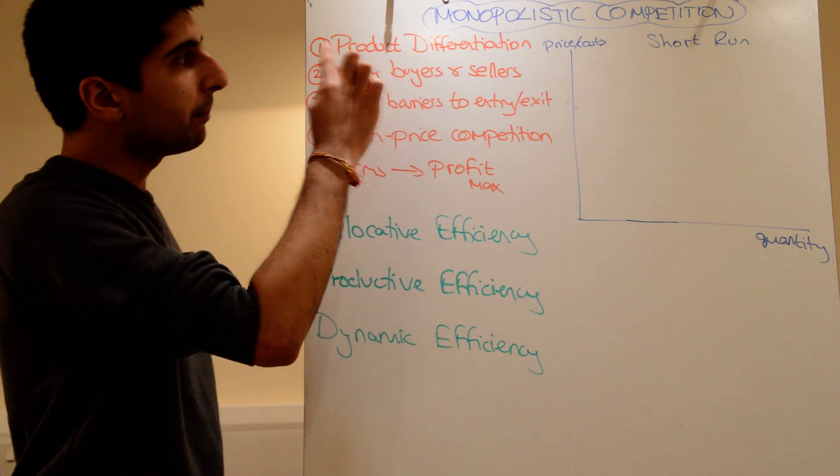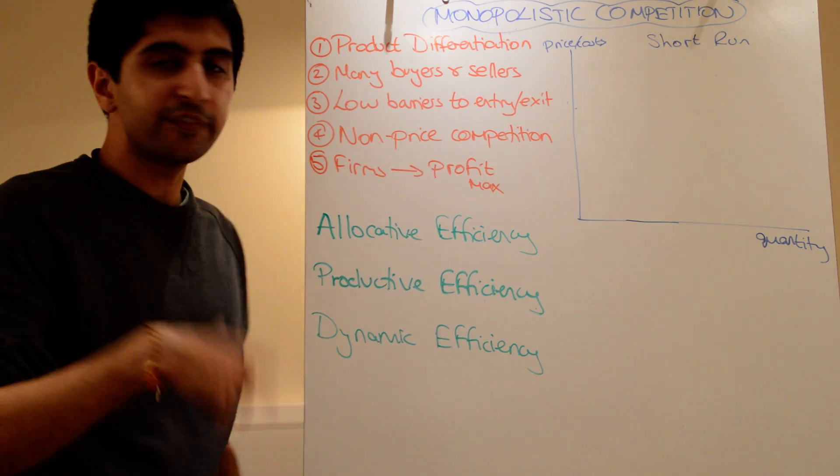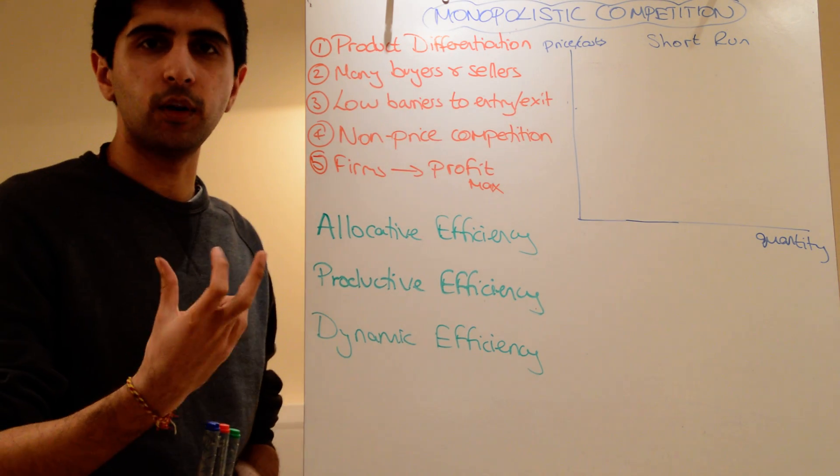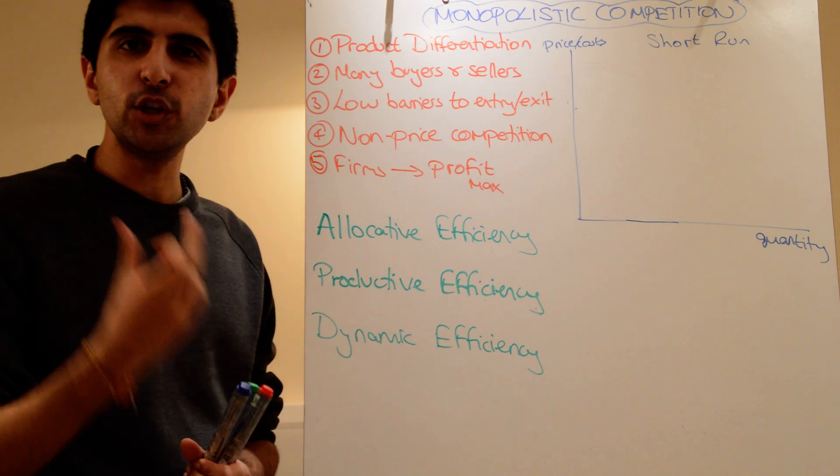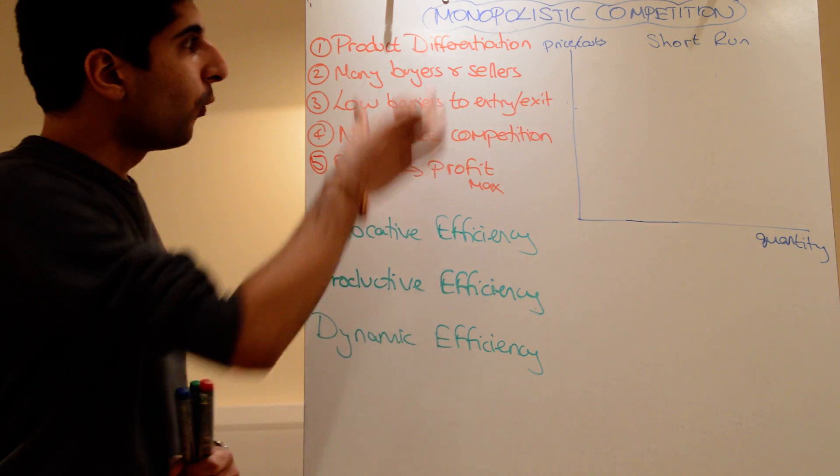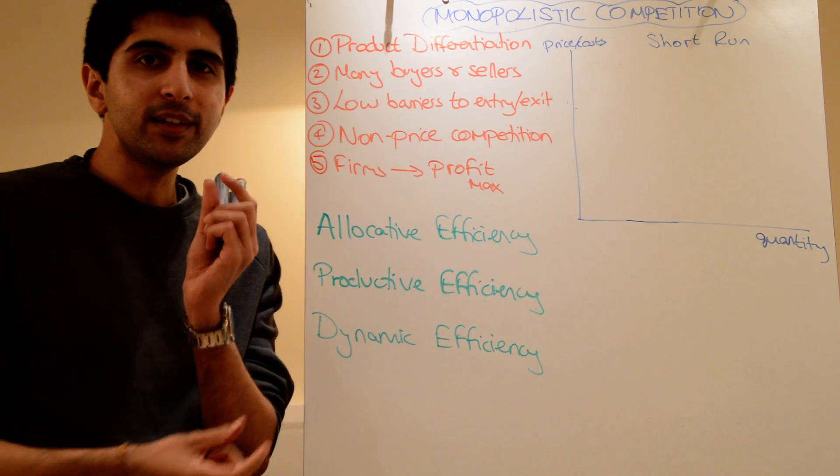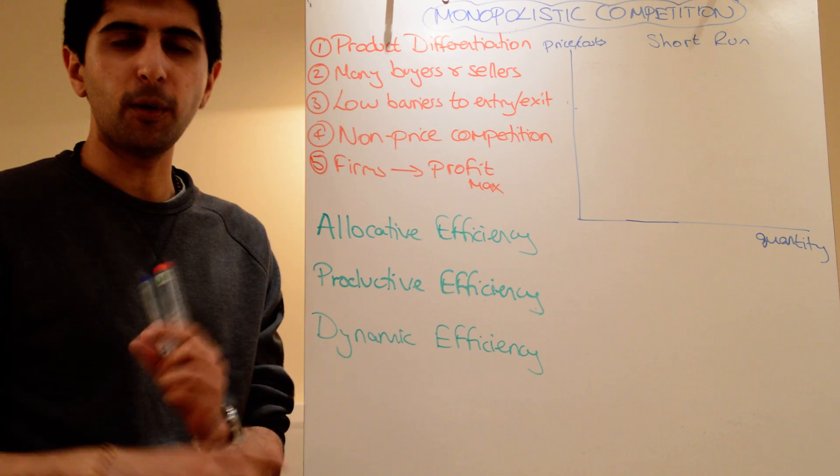What are the characteristics? Well, number one defines the structure: product differentiation. So firms out there have got some control over their products. There is something unique about them which makes them different to all the others out there. What makes them different though is not a great deal, so only slight product differentiation, not massive.